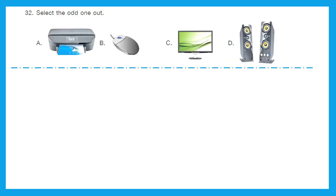Question 32: Select the odd one out. Printer, mouse, monitor, and speaker. Printer, monitor, and speakers are output devices, whereas mouse is an input device. So option B, mouse, is the odd one out.